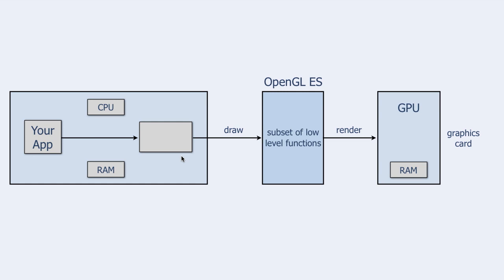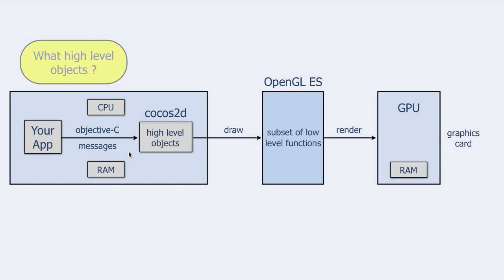But for iOS programmers, Cocos2D is of special importance. It is an object-oriented library consisting of classes written in Objective-C, the native language of iOS programmers. From your point of view, you interact with Cocos2D by sending Objective-C messages to the Cocos2D high-level objects.